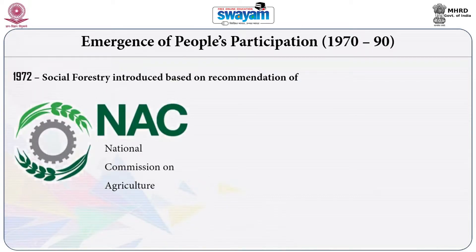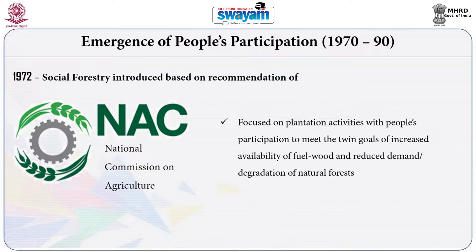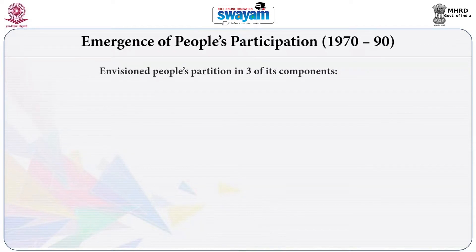A paradigm shift emerged in forest governance in India from the 1970s onwards. In 1972, the Social Forestry Program was introduced based on recommendations of the National Commission on Agriculture. For the first time, it diverted attention away from considering forests as raw materials, focusing instead on plantation with people's participation to meet the twin goals of increased availability of fuel for local communities and reducing demand on natural forest.